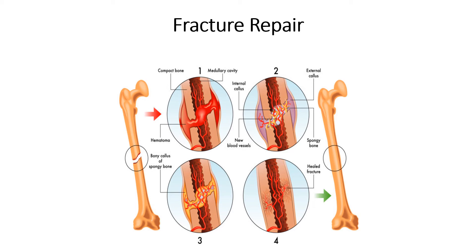Phase 2 — Callus Formation: سب سے پہلے soft callus بننا شروع ہوتا ہے اور یہ 2-3 weeks کے اندر بننا شروع ہوتا ہے۔ Clotted blood کو fibrous tissue اور cartilage سے replace کیا جاتا ہے جسے ہم soft callus کہتے ہیں۔ New connective tissue، blood vessels، cartilage اور soft spongy bone بنتی ہے، اور fibroblast cells اور osteoblast cells اس fracture site پر آ کر bone کو construct کرتے ہیں۔